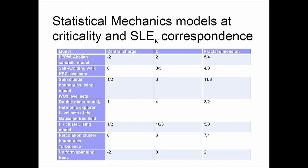For example, uniform spanning trees are related to the Abelian sandpile model. Also, the loop-erased random walk is the border of an avalanche on the Abelian sandpile model, or is the minimum spanning tree on a UST. So these are models which are connected somehow. They have the same central charge, but kappa changes because the stochastic path connected with the cluster frontier changes, and hence the fractal dimension changes.